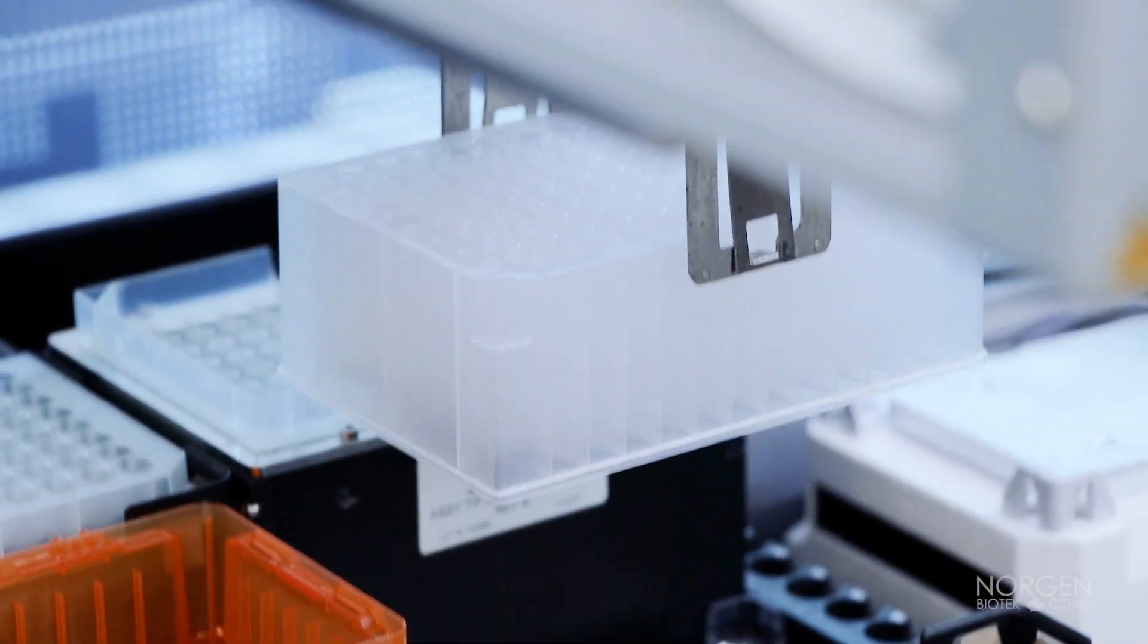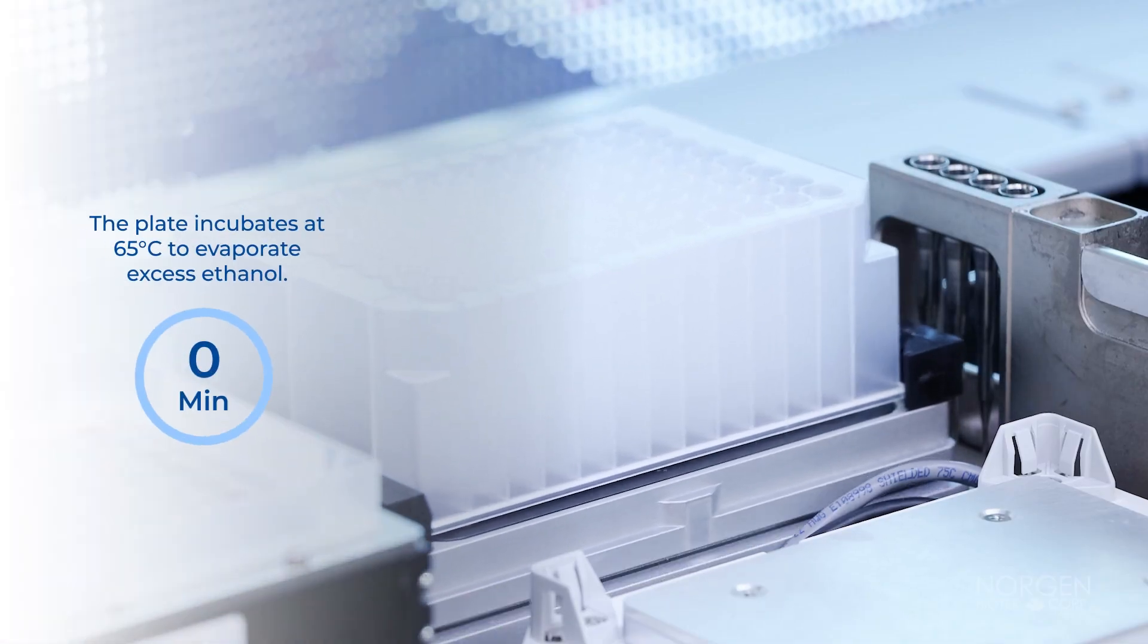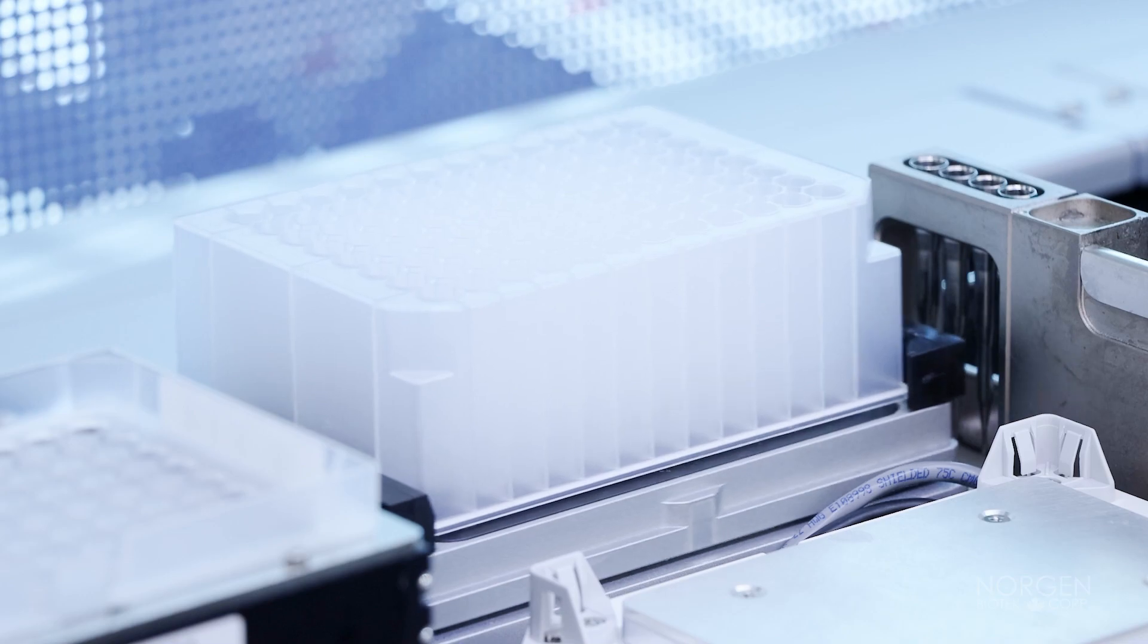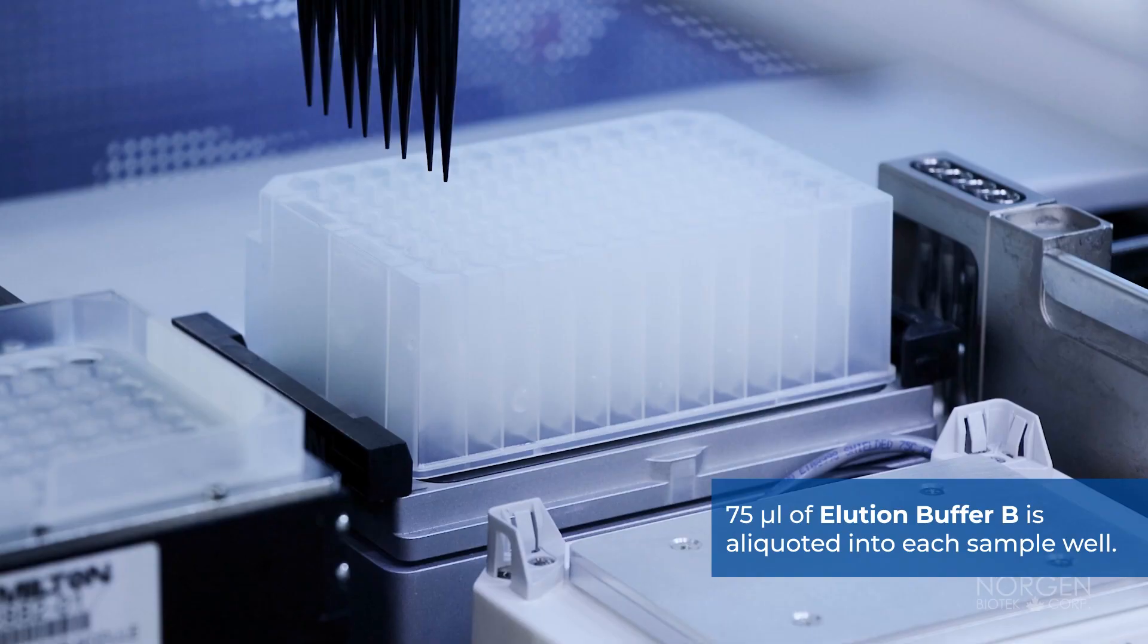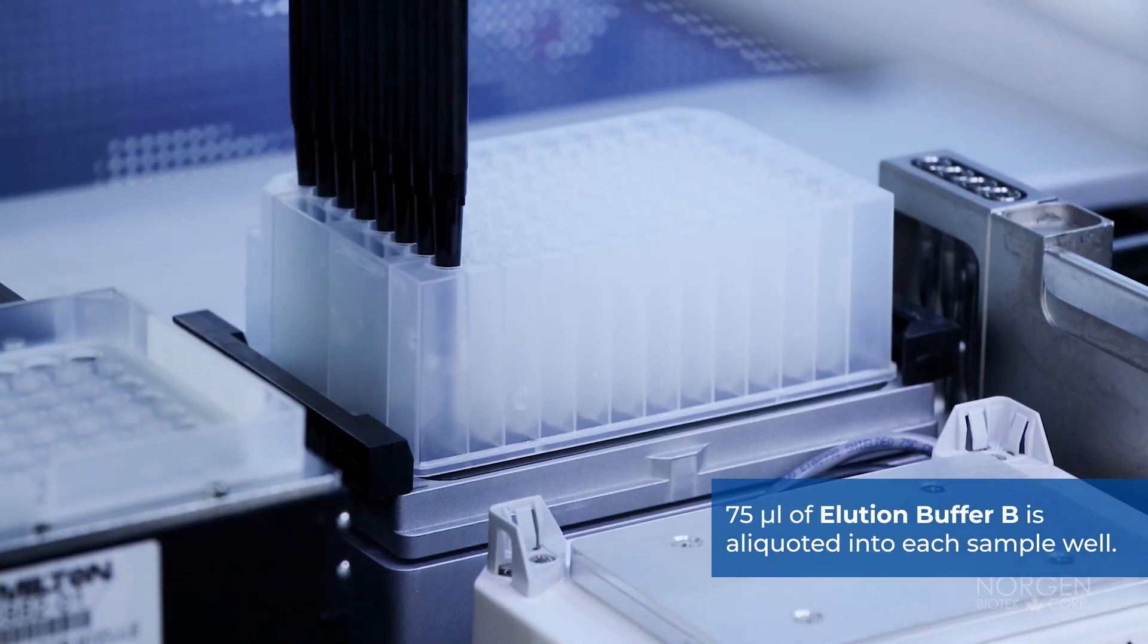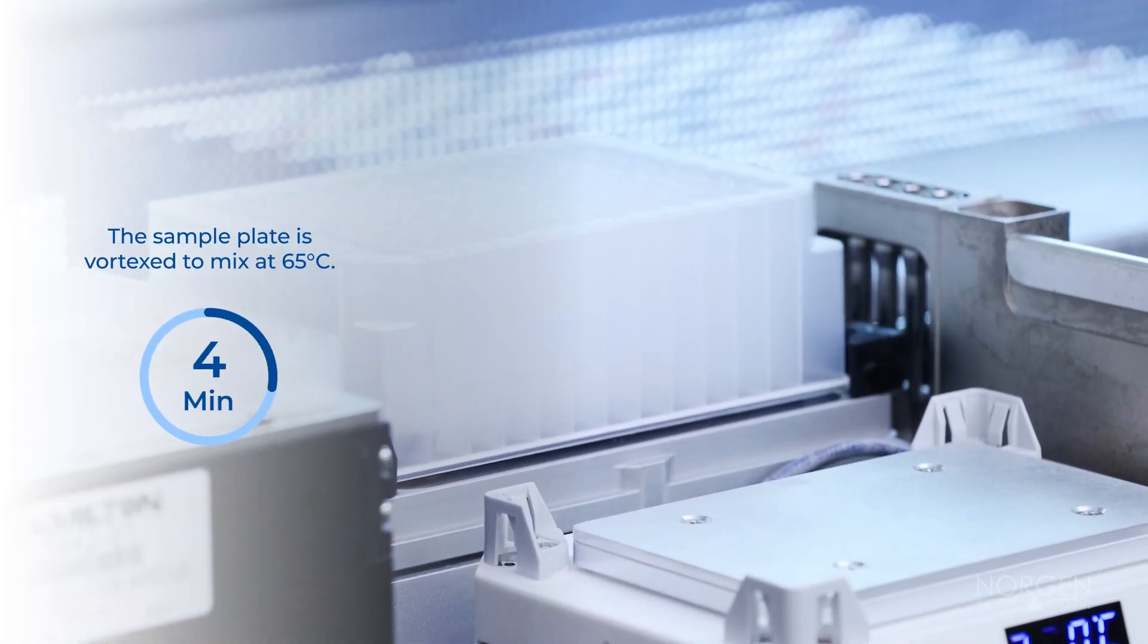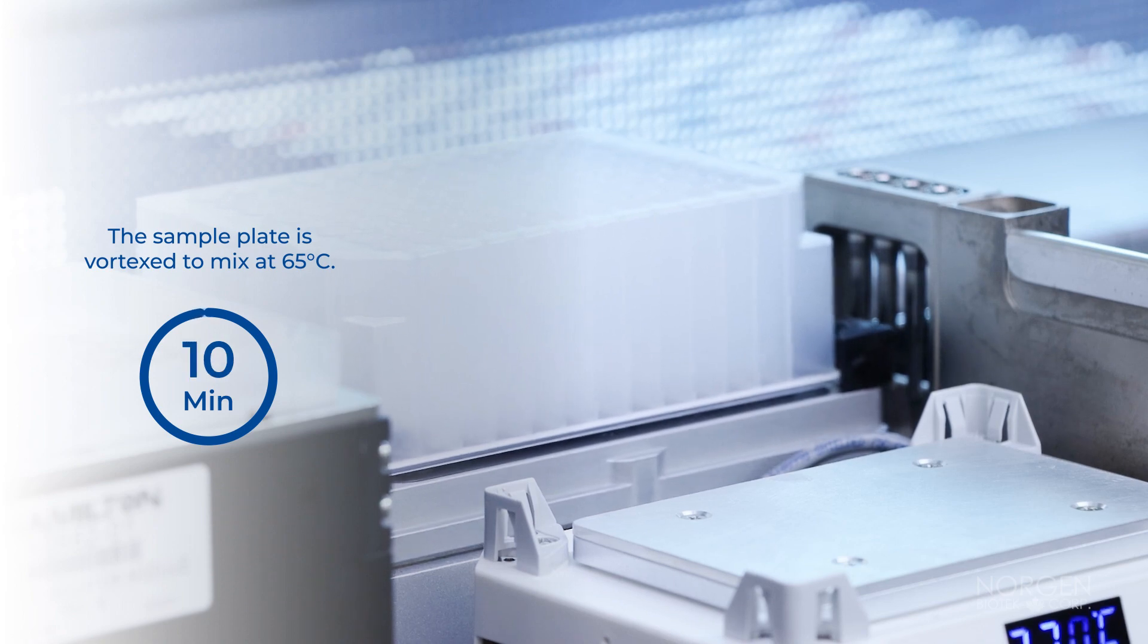The sample plate is transferred to the heater shaker and incubated at 65 degrees Celsius for 5 minutes to evaporate excess ethanol. After incubation, 75 microliters of elution buffer B is aliquoted into each sample well. The sample plate is then vortexed to mix at 65 degrees Celsius for 10 minutes.